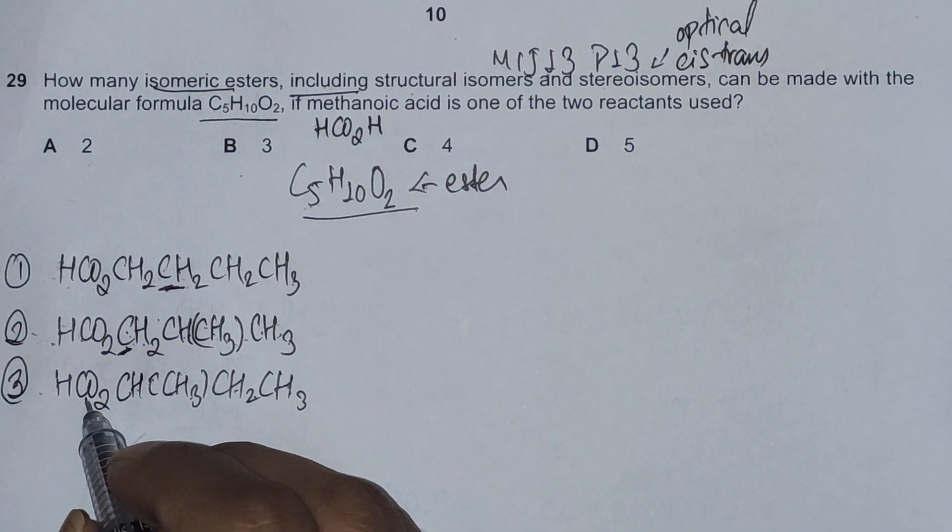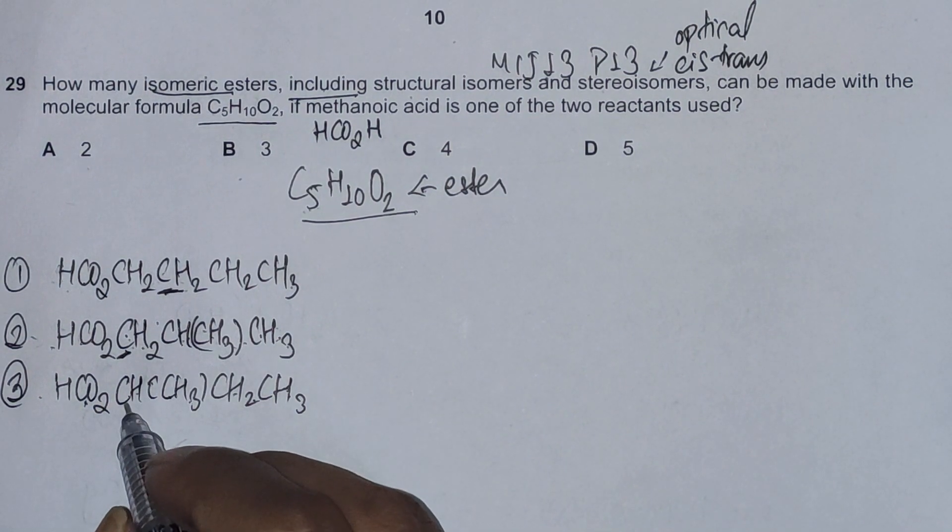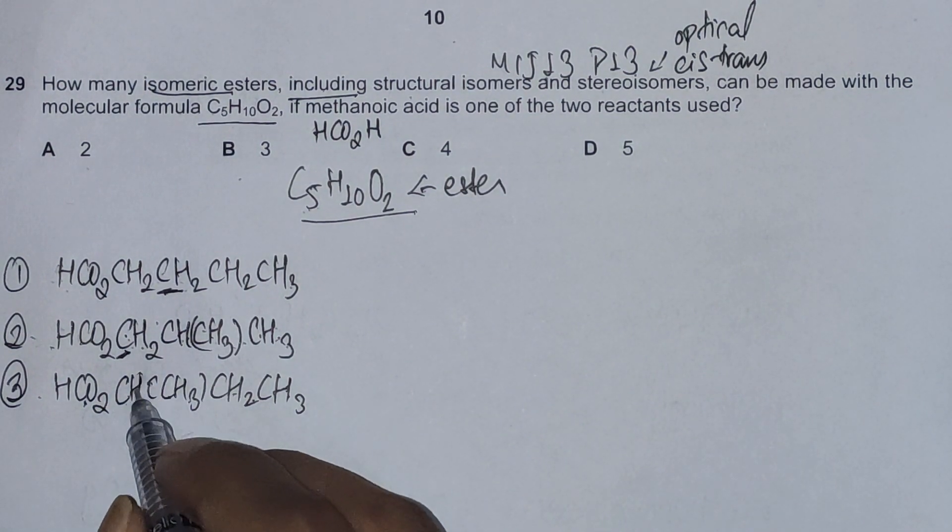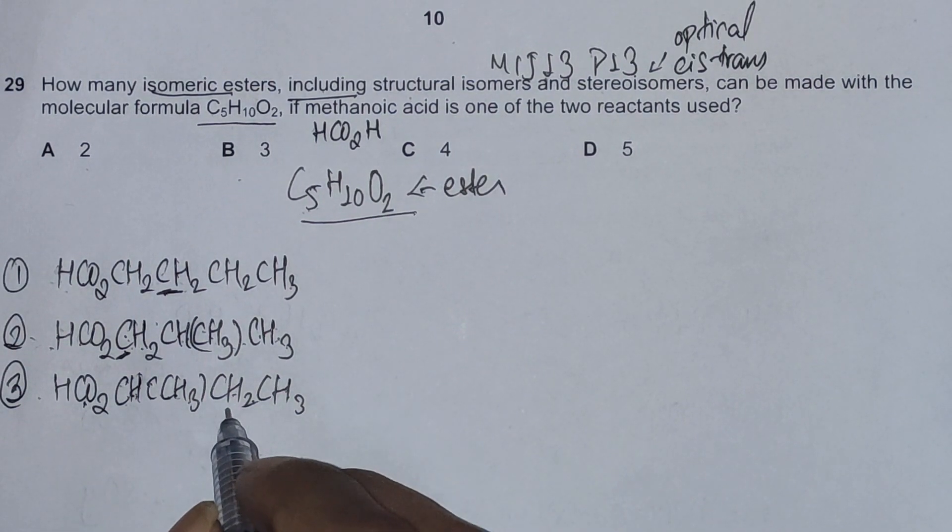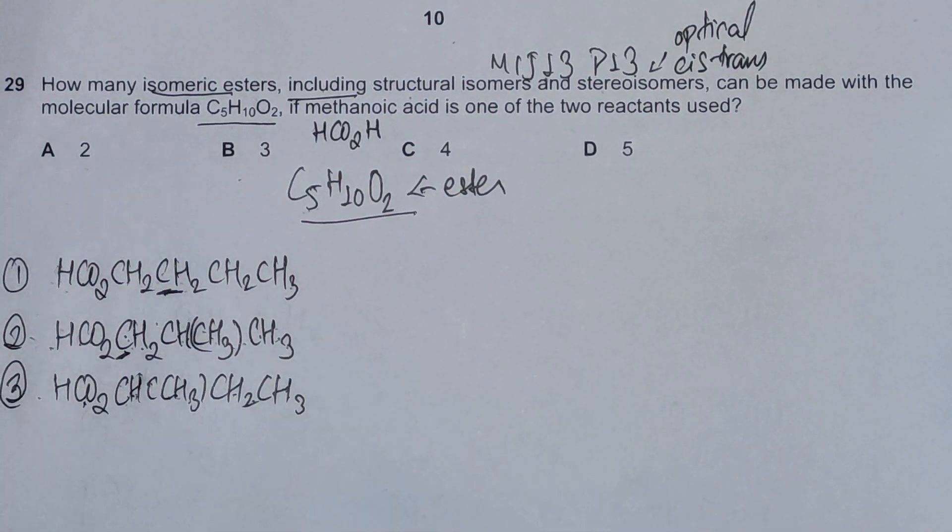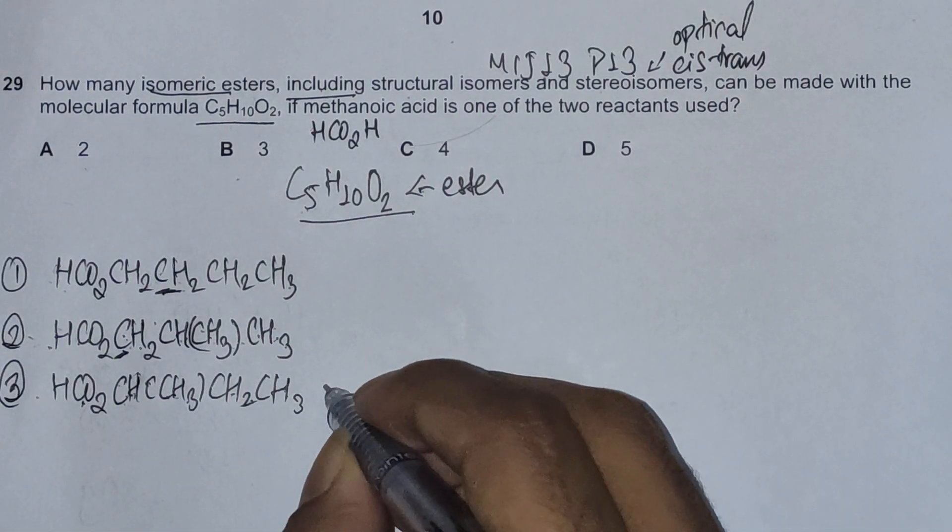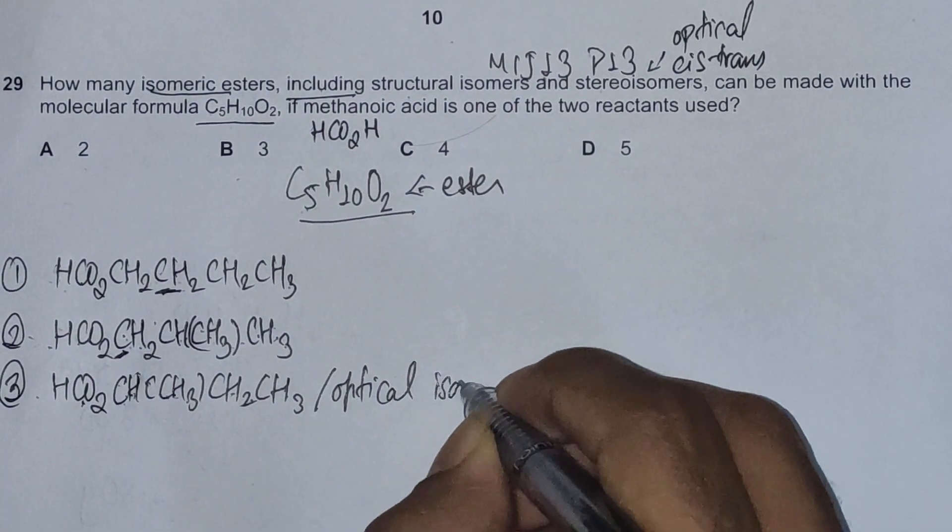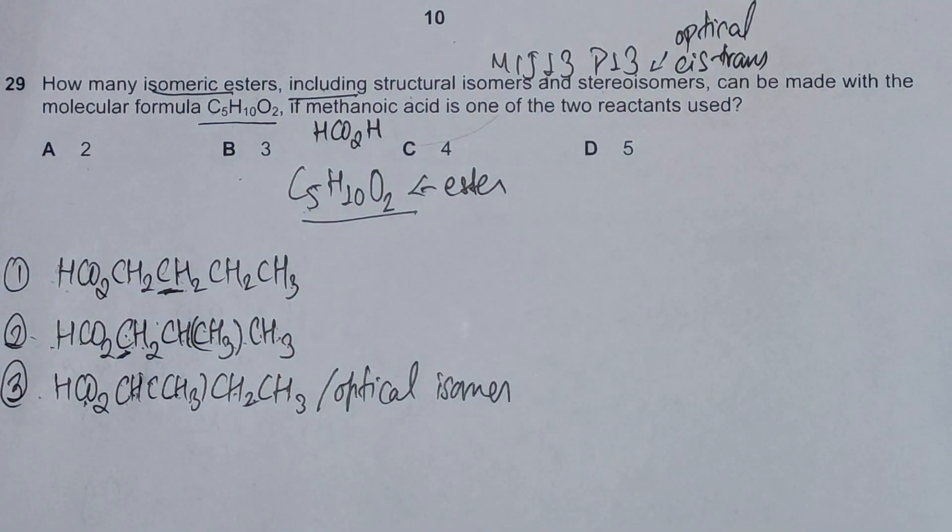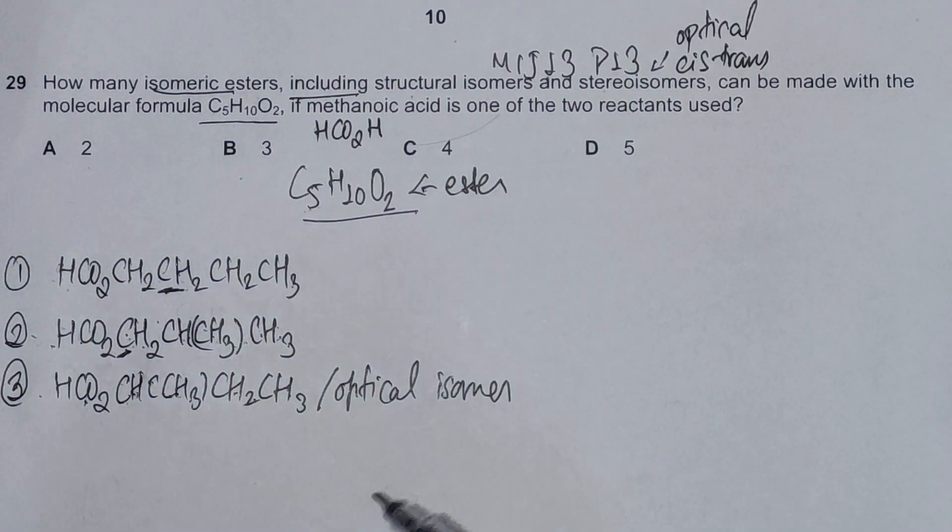Checking whether this has optical isomerism or not: this carbon doesn't possess optical isomerism, but this one might. One group of atoms is hydrogen, another is a methyl group. To the right it has CH2-CH3 and to the left it has HCO2. So this one possesses optical isomerism - it has an optical isomer. We don't need to go into details of what the optical isomer is going to be because the question is not concerned with it.